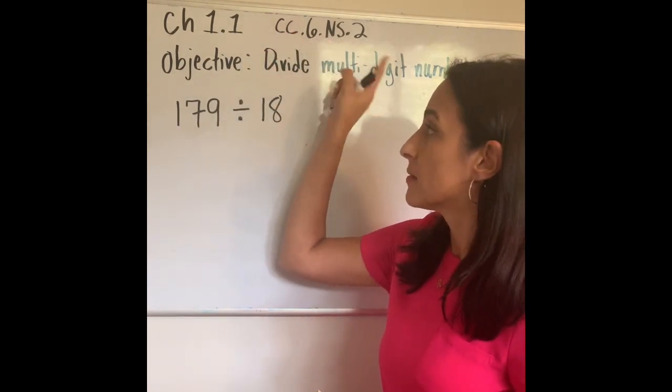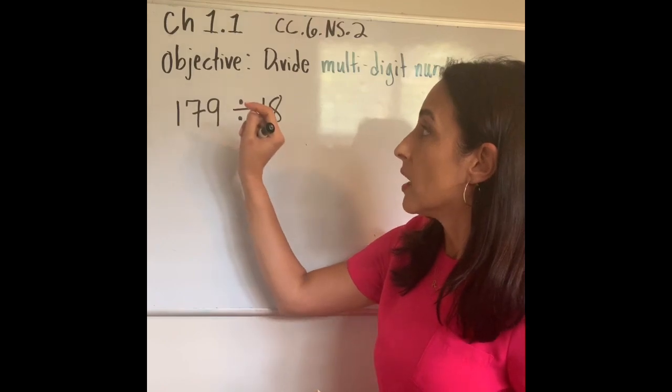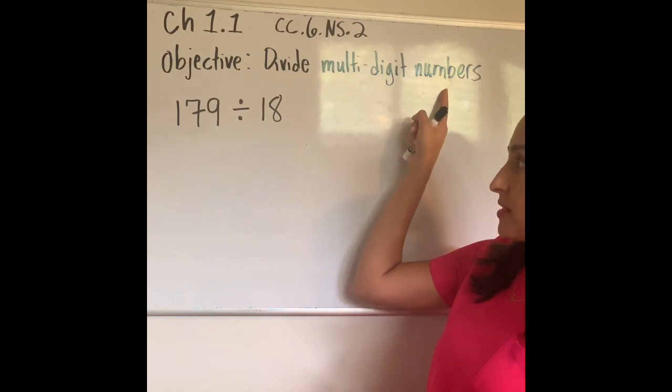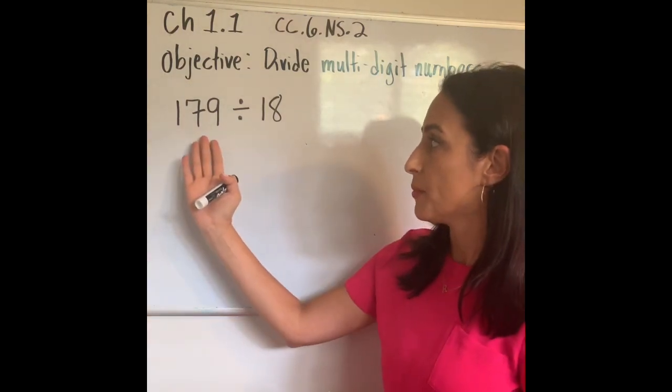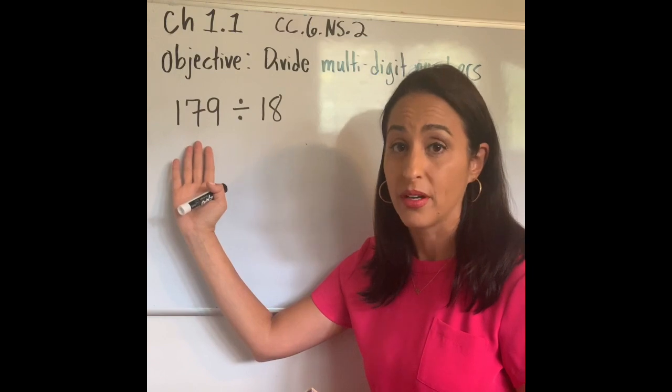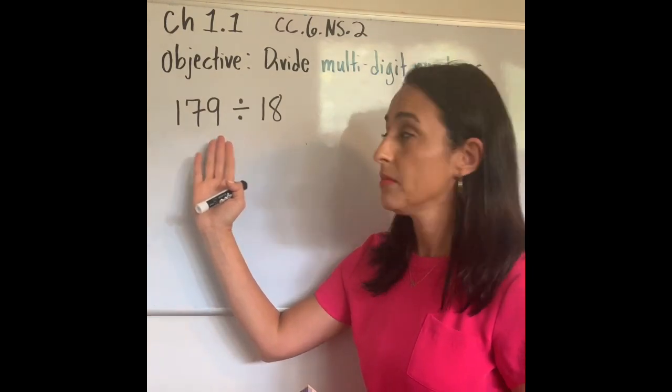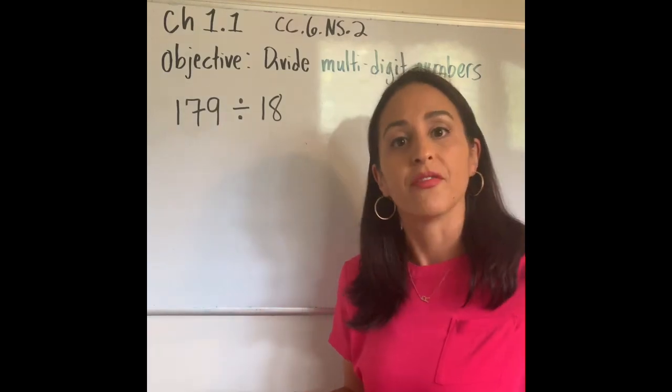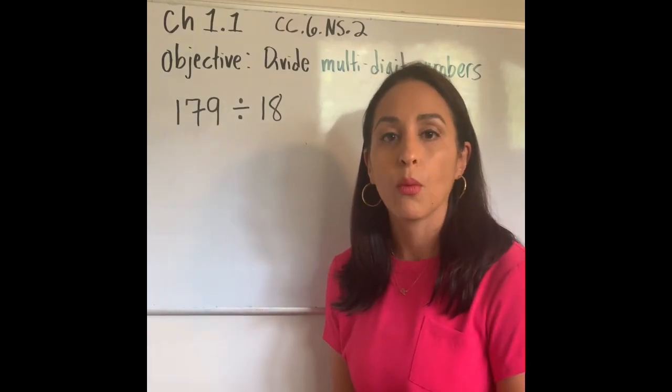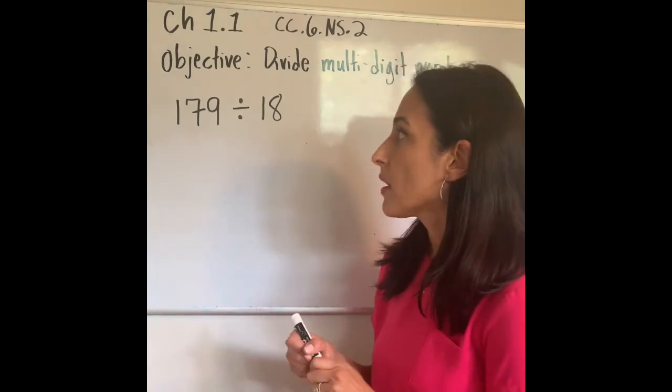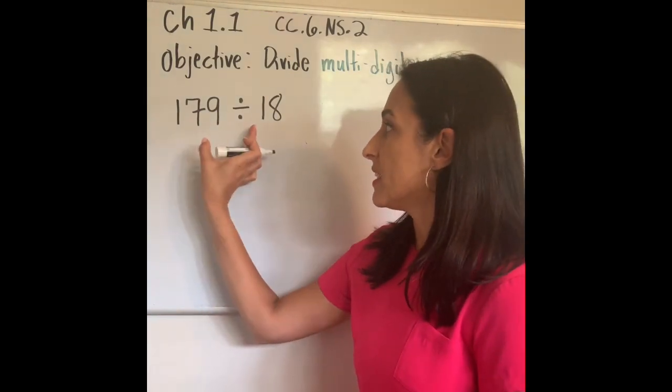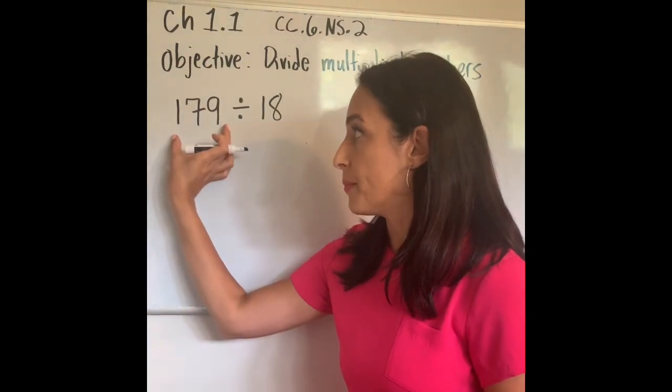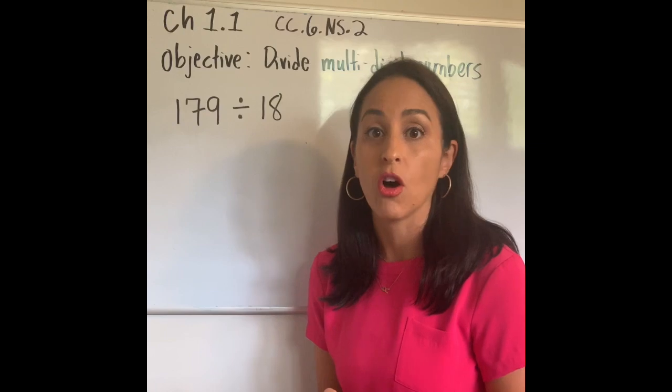Today we are starting with chapter one, lesson one. Common Core Standard is for sixth grade Number Sense 2. Our objective: we will be dividing multi-digit numbers. So we have a number here that's three digits—it's a multi-digit number: 179 divided by 18. Now this example is not in your book; I'm doing a very basic example and I want to review some information with you.